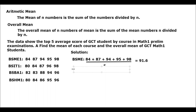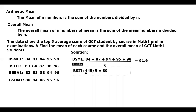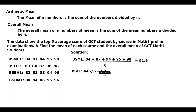Solving for BSME: BSME mean is equal to 80 plus 84 plus 87 plus 96 plus 98. So 80 plus 84 is 164, and the total sum is 445 divided by 5. So the mean of the BSME students is 445 divided by 5, which equals 89.